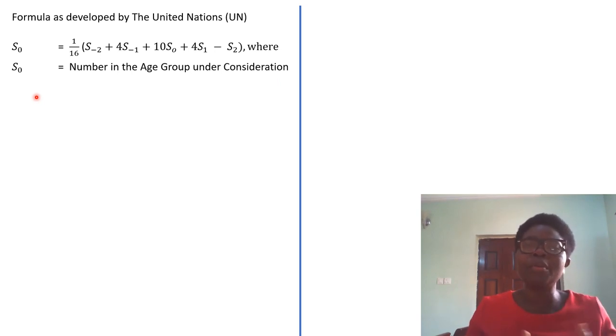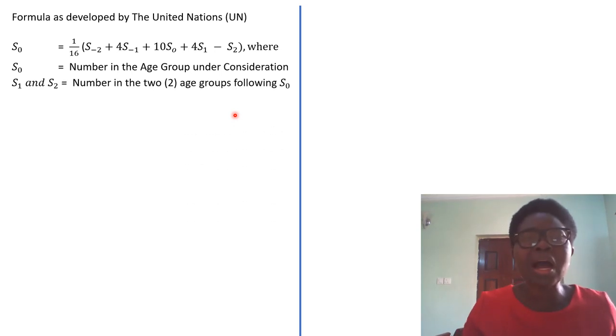Census is broken down into age groups. When you're looking at the census figure, it's broken down into age groups. For example, zero to four, age five to nine, and so on. So when you have zero to four for example, and you want to smooth it out, you take that group. This is what S₀ represents - number in the age group under consideration. If you are having zero to four, it means ages zero, one, two, three, and four are in that group.